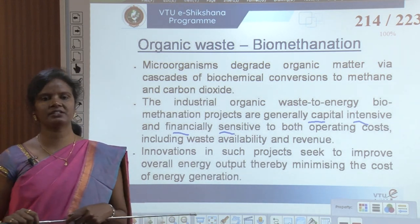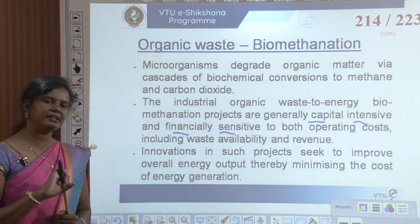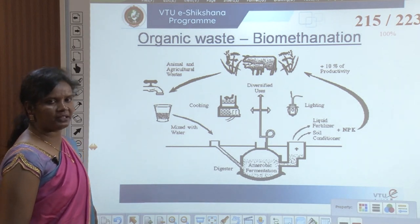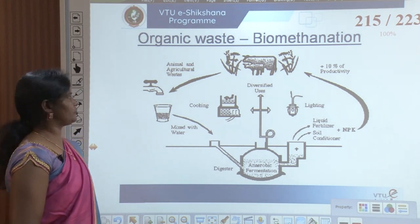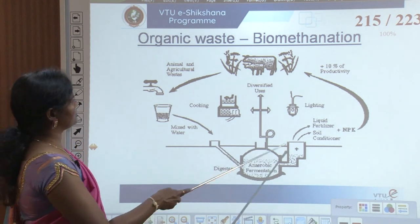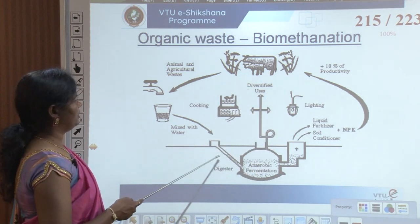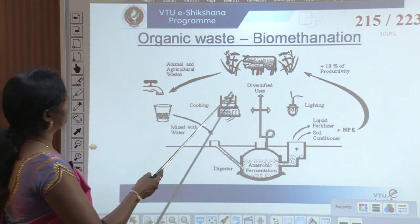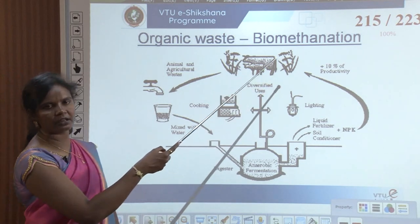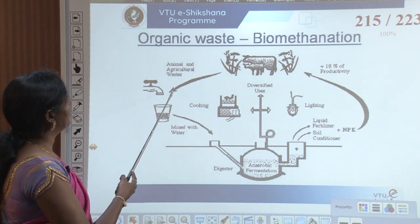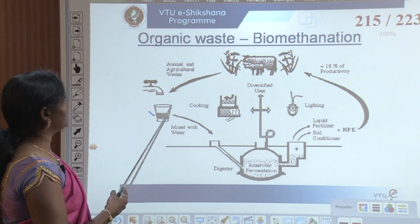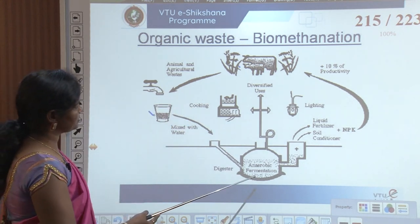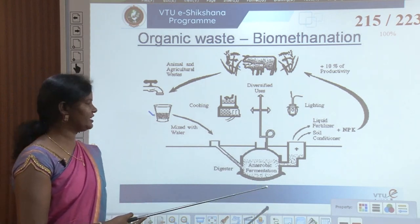The biomethanation process is explained through a sketch of the equipment arrangement. From animals and plants, whatever organic matter is released goes into a container mixed with water. Animal and agricultural waste is mixed with water, then processed into anaerobic fermentation.